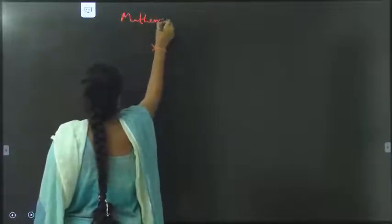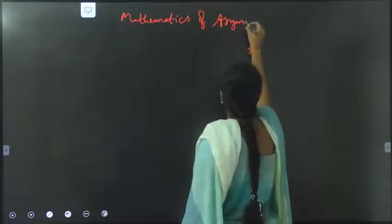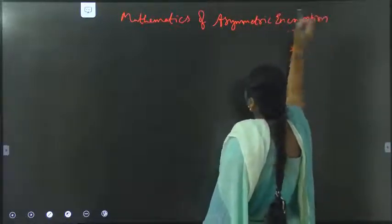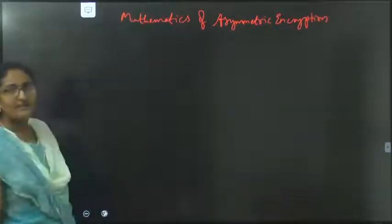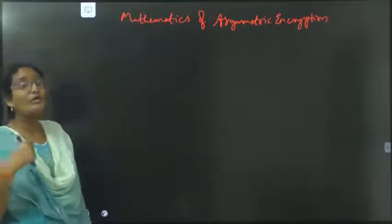Good morning everyone. Today let us discuss Mathematics of Asymmetric Encryption. We are discussing CNS and Unit 3. In Unit 3 we have already seen the introduction and RSA algorithm. Now we are seeing Mathematics of Asymmetric Encryption. We know symmetric encryption, symmetric algorithms, and that RSA is an asymmetric algorithm.